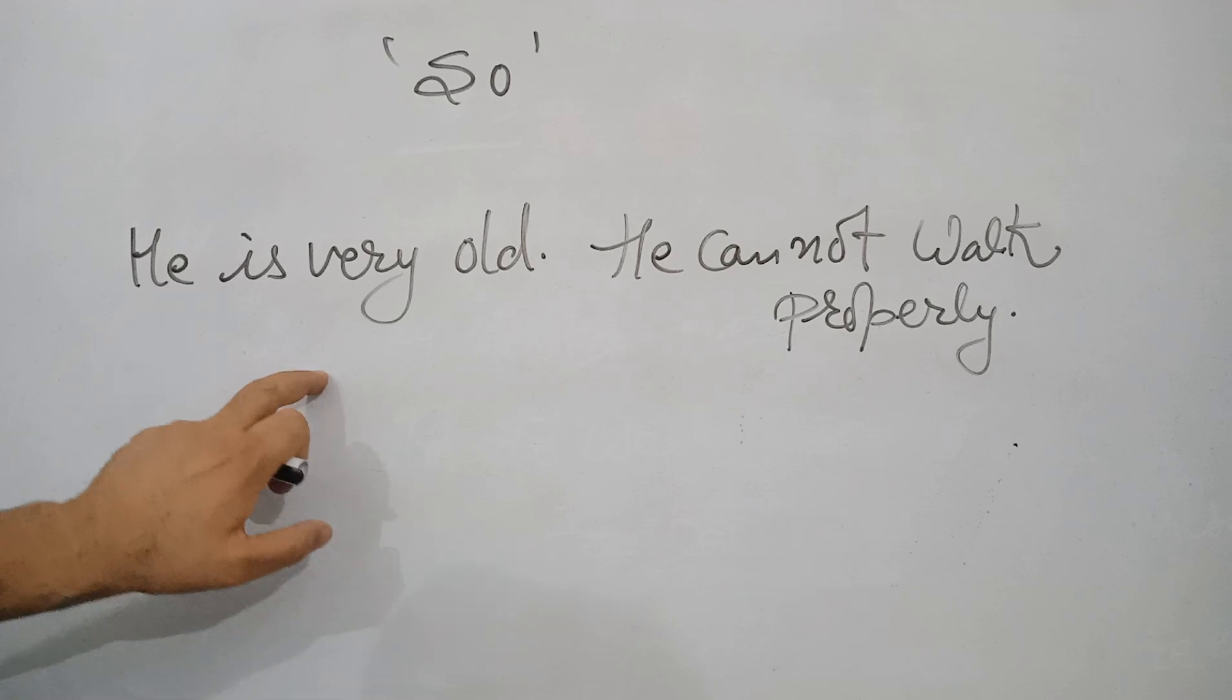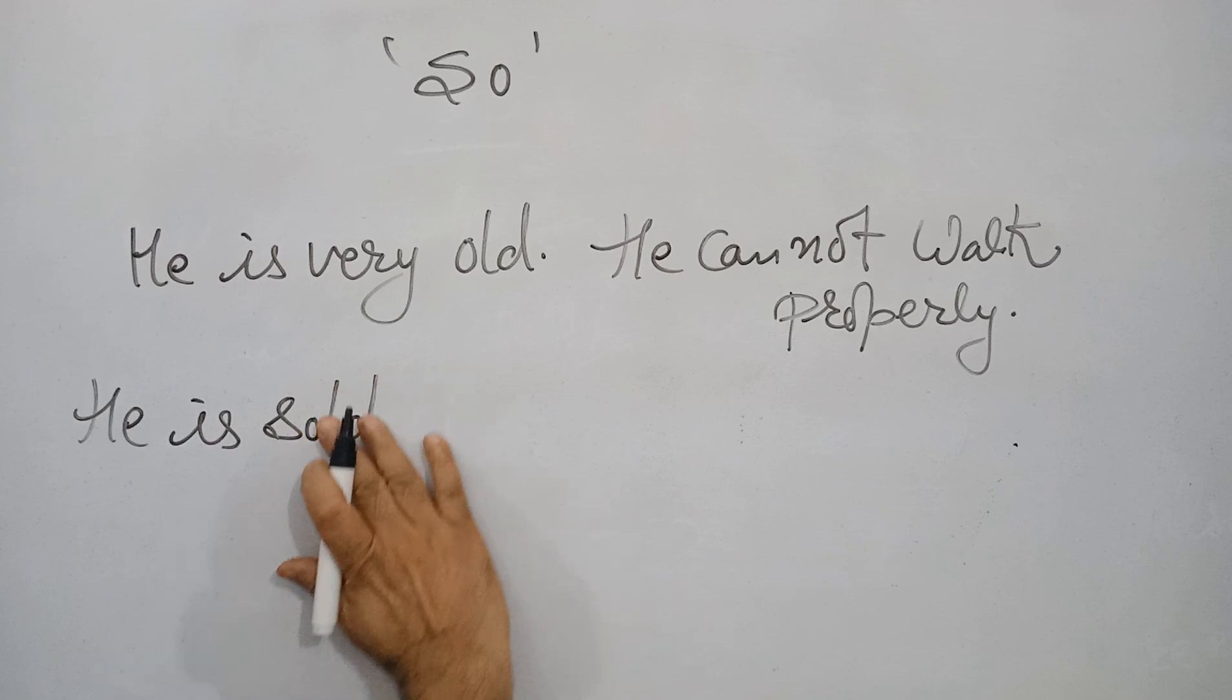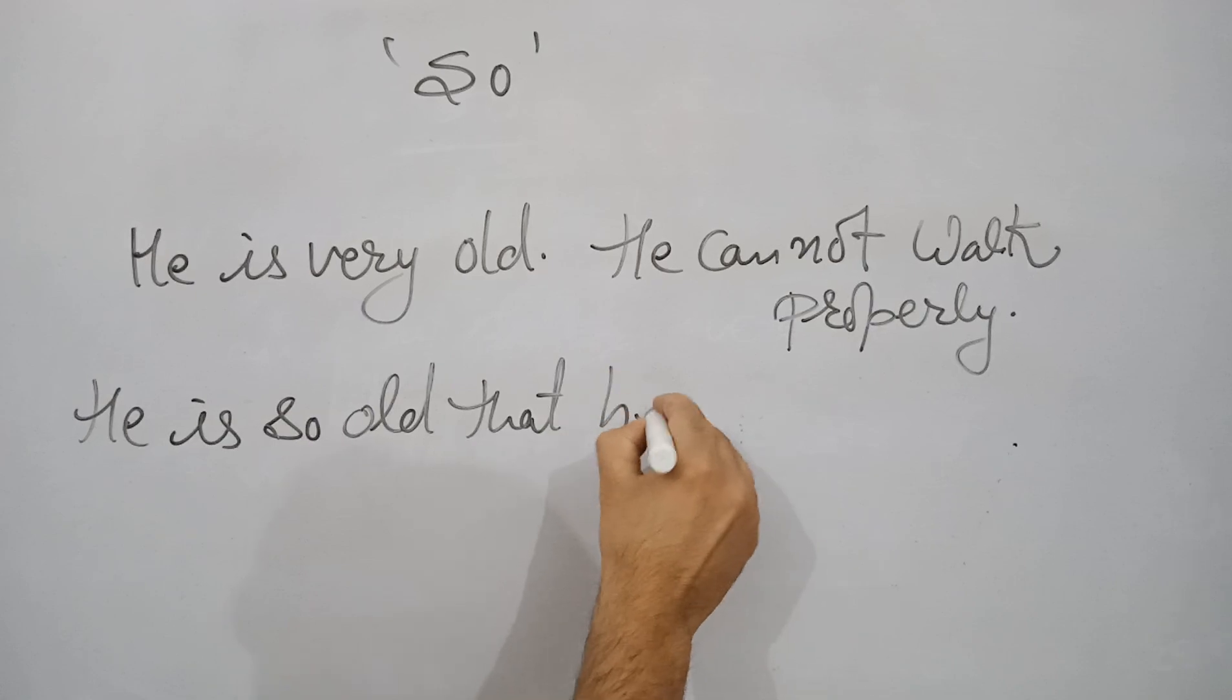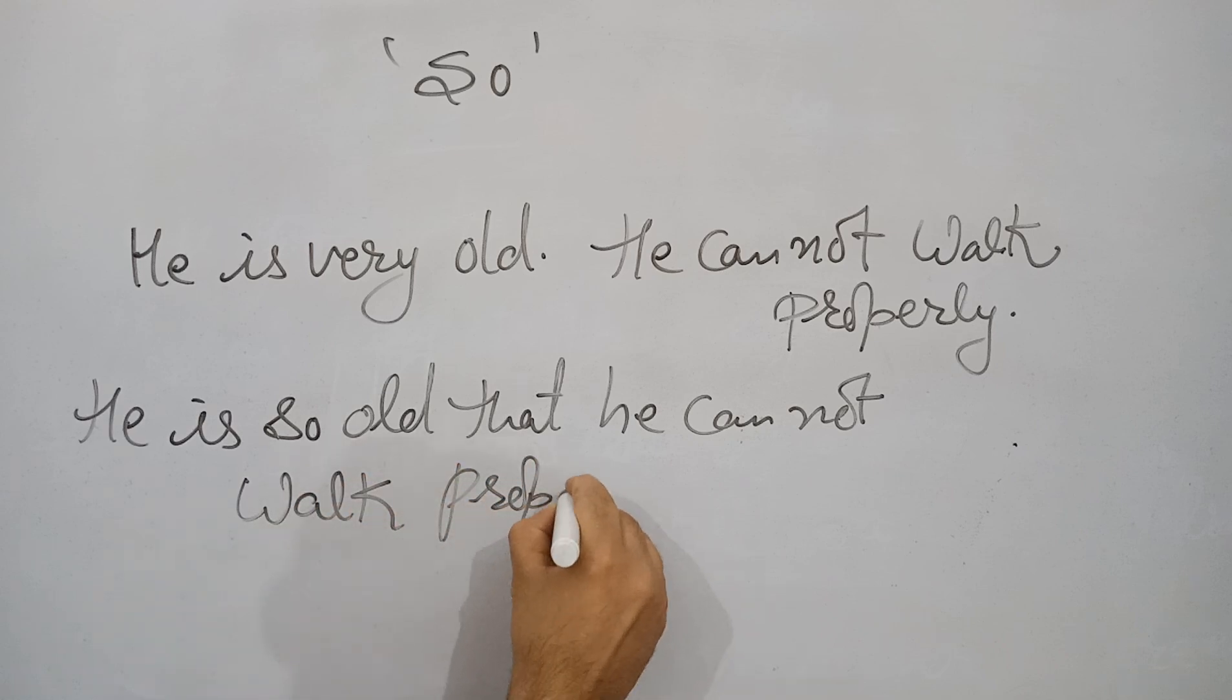The same sentence can also be combined together using 'so'. When can you use 'so'? He is so old that he cannot walk properly. This is also your complex sentence.